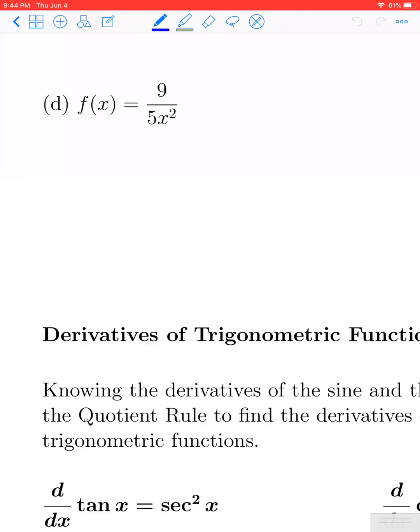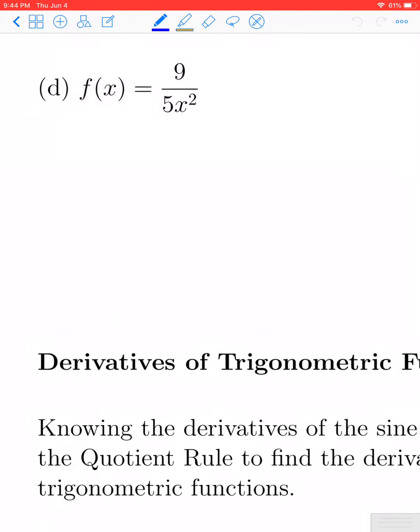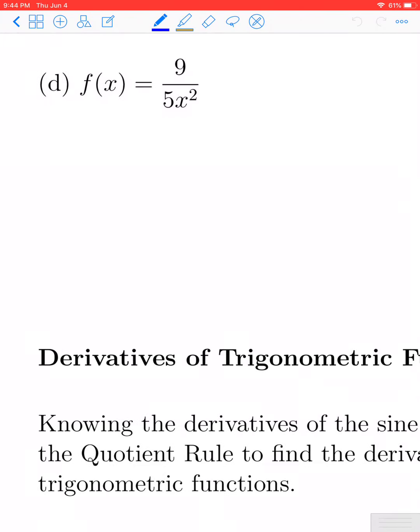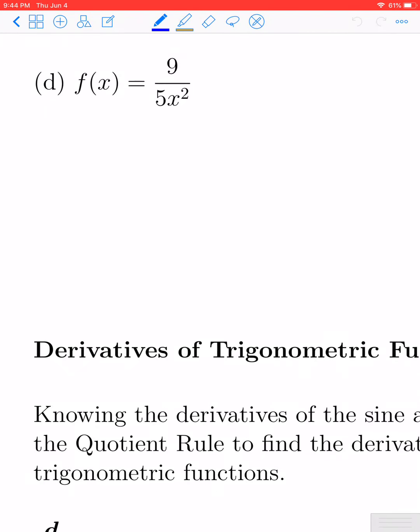There was one more part to the last question we didn't do yet. This is part D. We don't necessarily need to use the quotient rule here. We can rewrite this as 9 fifths x to the negative second power.